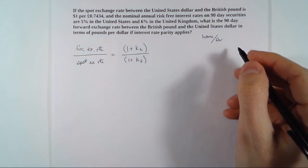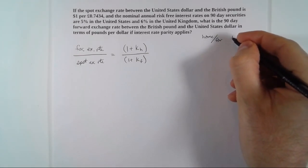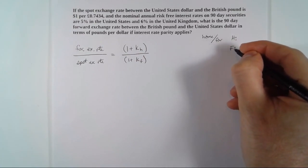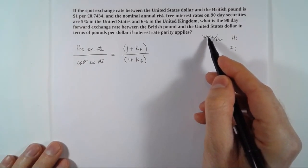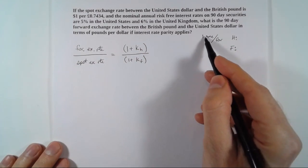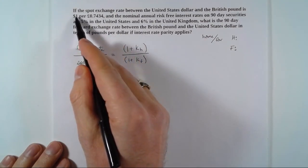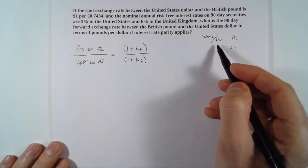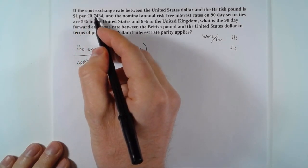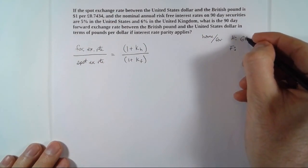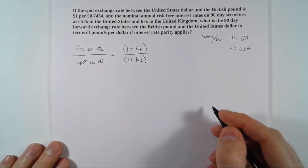We need to think through who we're going to call home and who we are going to call foreign, and I recommend that we write that down. The exchange rate I have here is 0.7434 British Pounds per one dollar, and since it needs to be in terms of units of home per one unit of foreign, it's actually easier to call the US foreign and Great Britain home in this context. So we are going to call Great Britain home and the USA foreign.